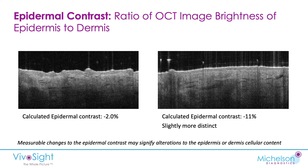Moving on to epidermal contrast: here we're looking at the ratio of the intensity level of the epidermis against the dermis, and it can be quite subtle. In one case, we measured a value of 2.2%, whereas in the one on the right, we have an 11% contrast. These changes are too small for the human eye to discern, but VivaTools can detect and calculate them. It may indicate alterations or differences in the epidermis or dermis cellular content, which may be relevant to tracking a particular condition.